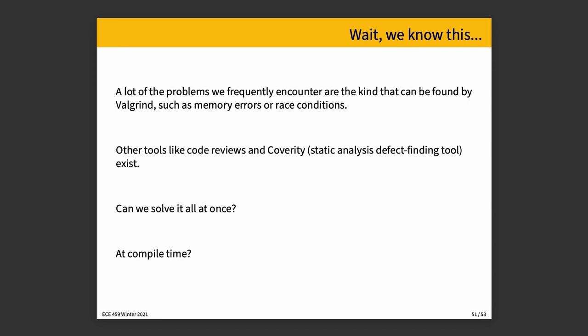We could ask: could we solve all of these problems at once, and could we solve it at compile time? Something like Valgrind is very good at identifying a memory leak, but it's at runtime. So if under observation your program never runs the code path that leaks memory, you don't find the memory leak. You might hear about it through a bug report and eventually try to fix it, but it's more expensive when the code has already been shipped.